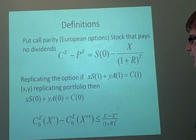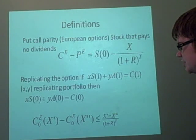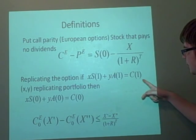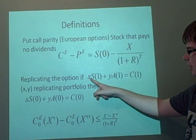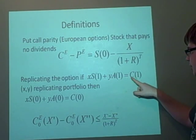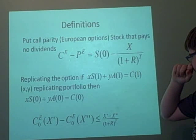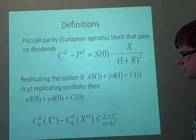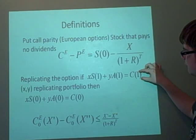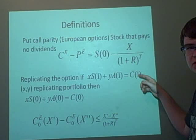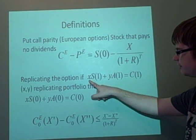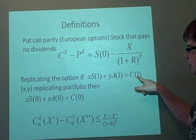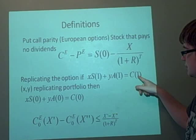Because that T will come from your forward price. Replicating the option - now this is something which took me a while to understand. But it's called replicating the option if you can get this to work. So if you can get X and Y such that xS(1) and yA(1) equals C(1), then it's called replicating the option.